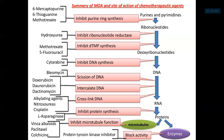Cytarabine inhibits DNA synthesis. Bleomycin causes DNA strand breaks. Doxorubicin, daunorubicin, and dactinomycin are antibiotics used as anti-cancer agents — they intercalate DNA and inhibit its transcription. Alkylating agents, nitrosoureas, and cisplatin cause cross-linking of DNA strands, thereby inhibiting replication.